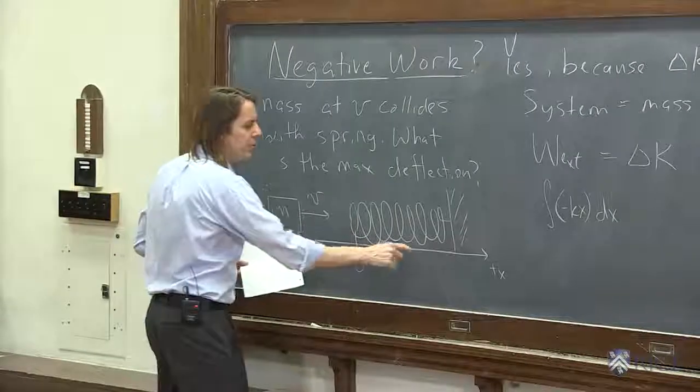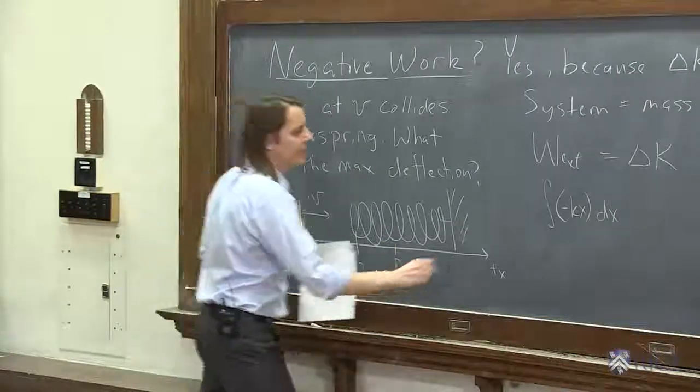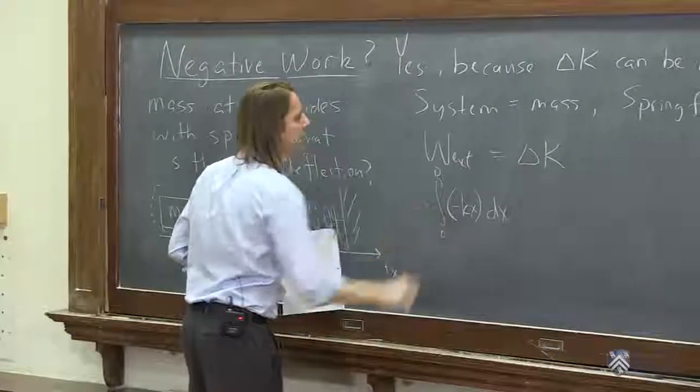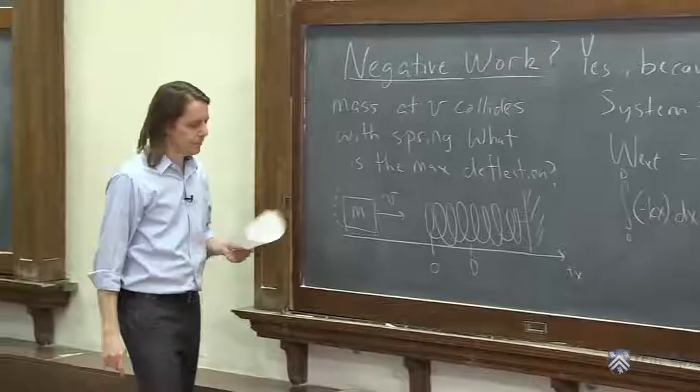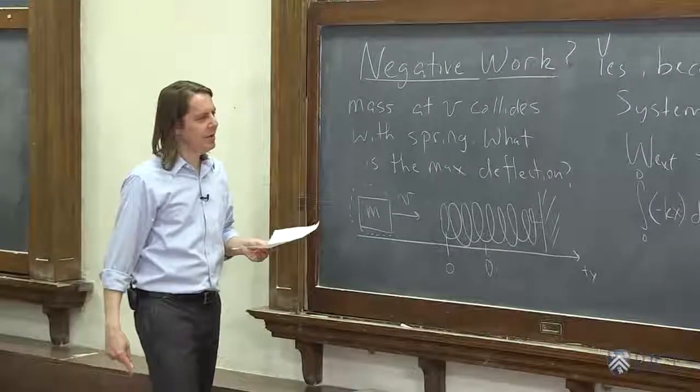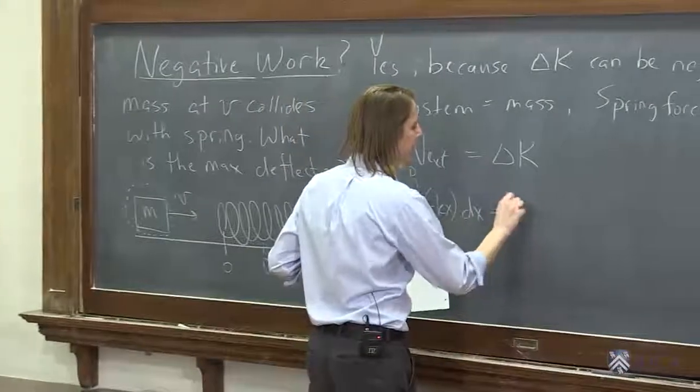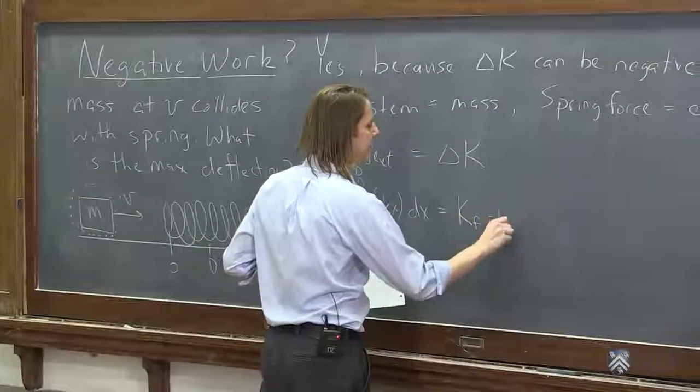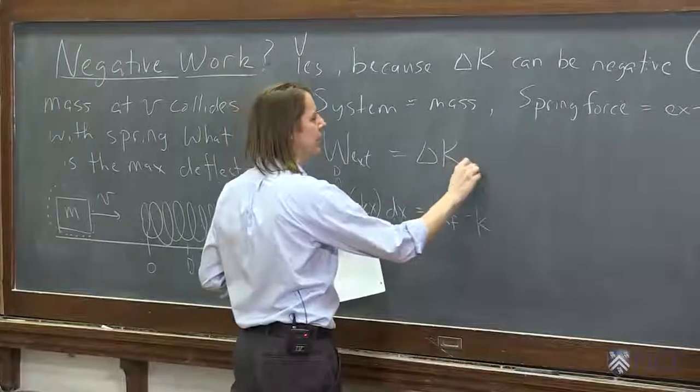So minus kx dx is that integral. And we're going to integrate from zero to, let's just call it big D, the displacement. Zero to D. That's how far it gets. So that's one side. The other side is delta K. That must be the kinetic energy final minus initial, final minus initial of the system.